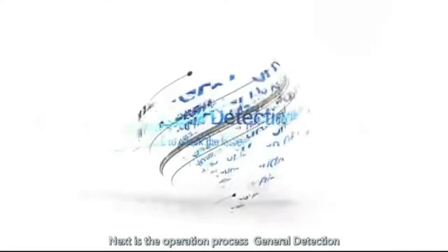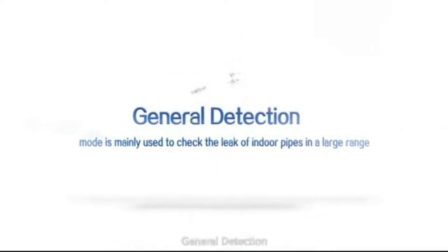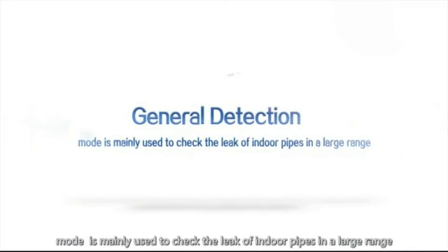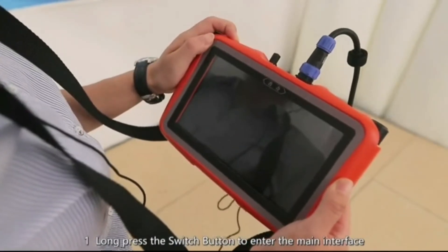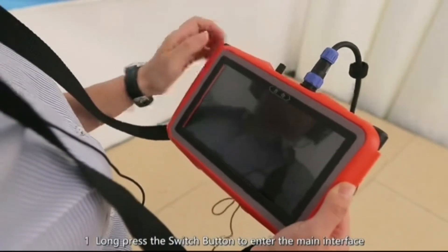Next is the operation process: general detection. General detection mode is mainly used to check the leak of indoor pipes in a large range. One, long press the switch button to enter the main interface.